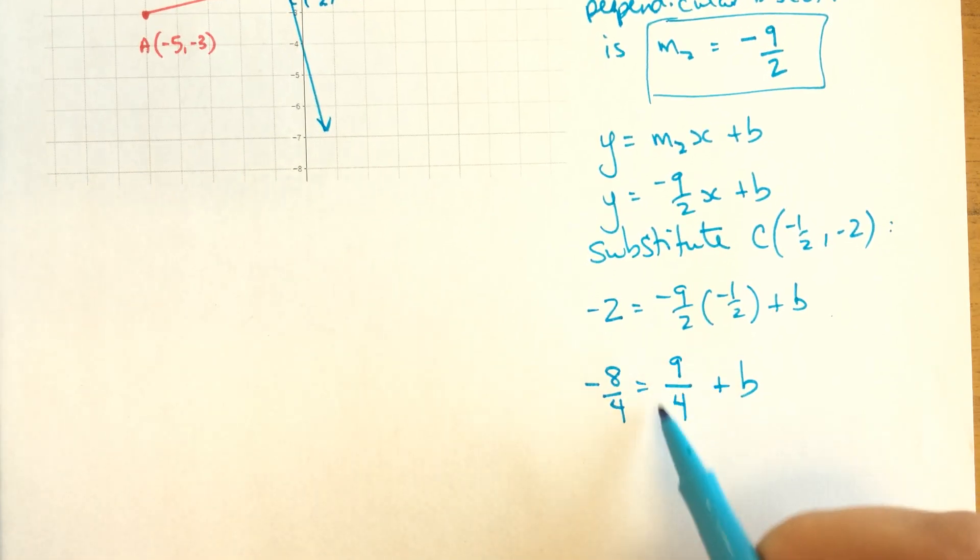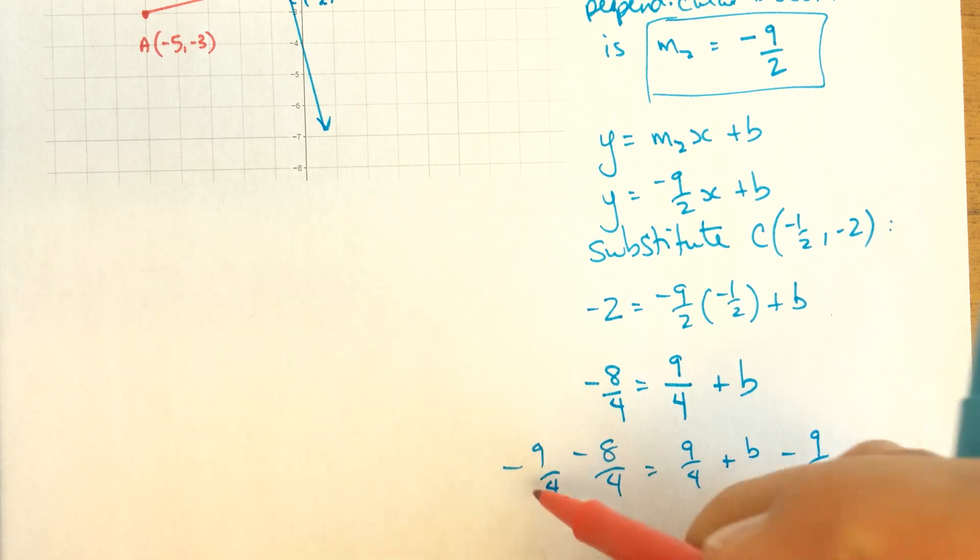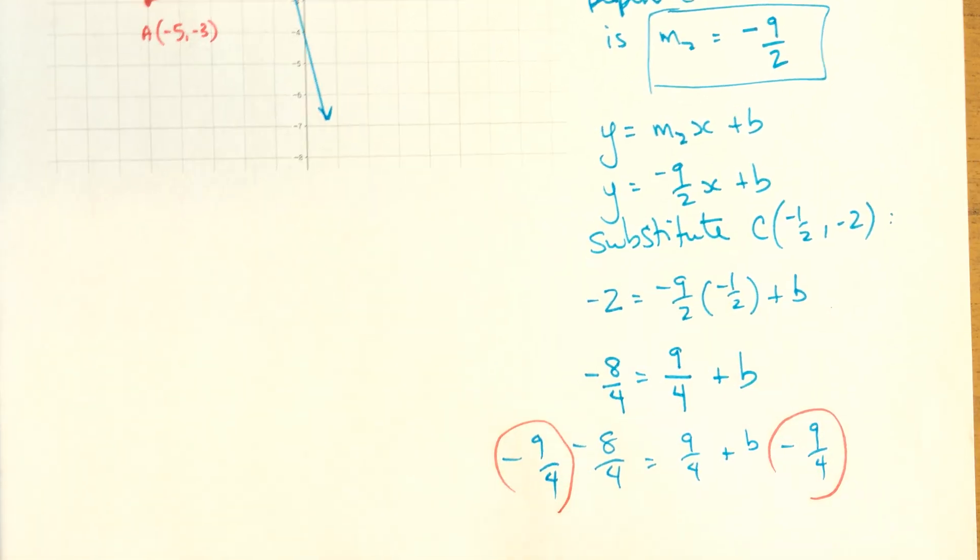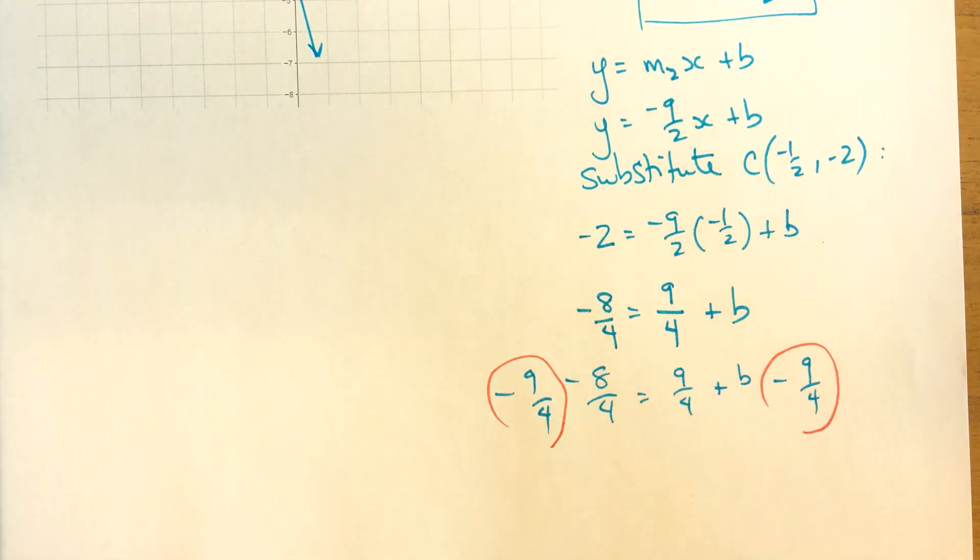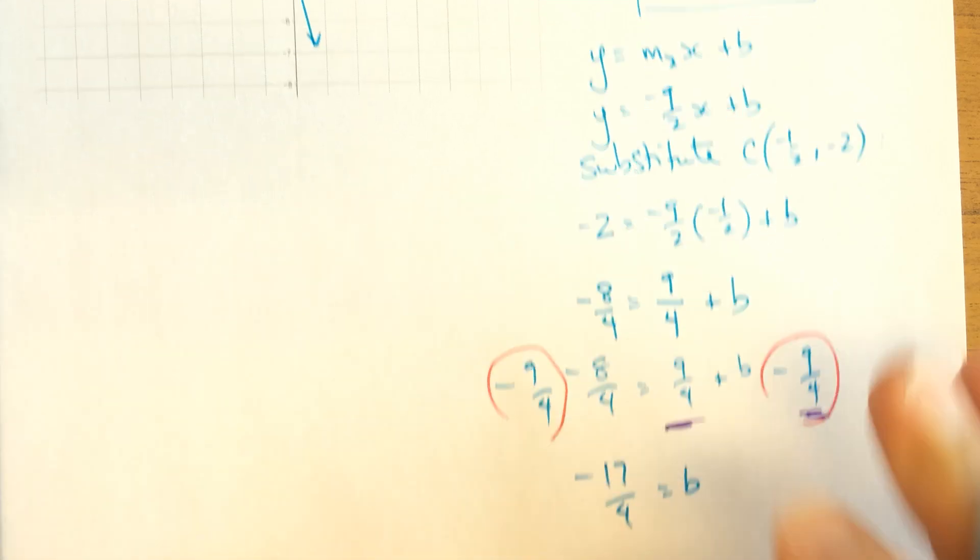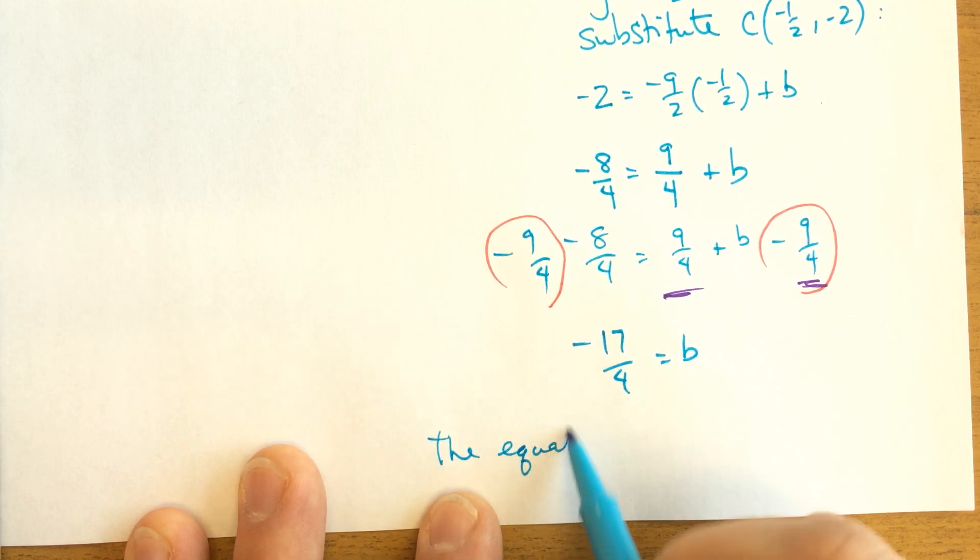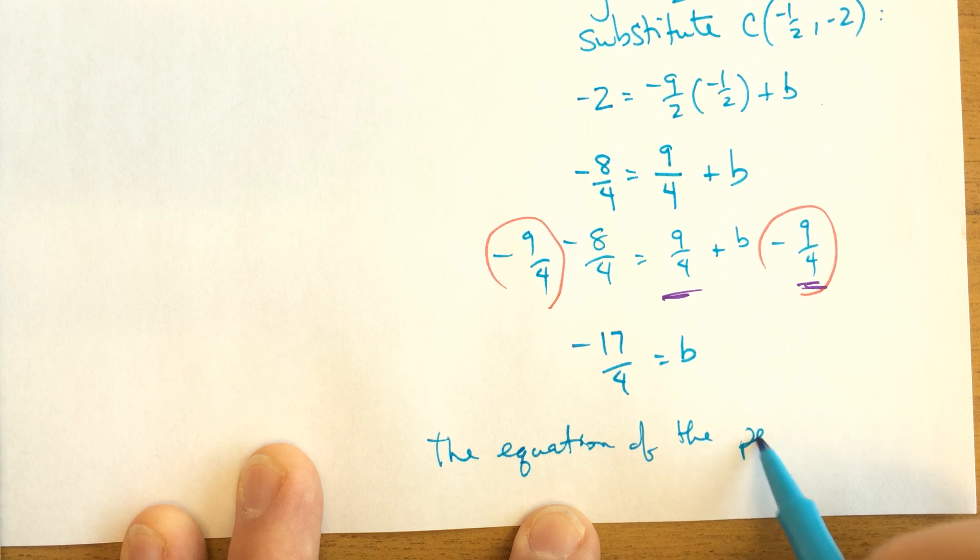Now I'm going to subtract nine quarters from each side. Maybe I'll write this one out. And I'll do a negative nine quarters over here. There's what I did to each side. I subtracted nine quarters from each side of that equation, so the equation is still balanced. These guys here will cancel each other out or they will add up to zero. So I'm left with negative, let's see, seventeen quarters equals B.